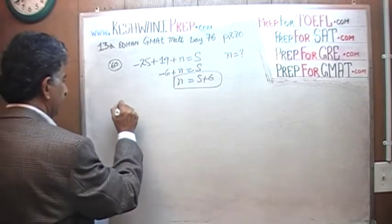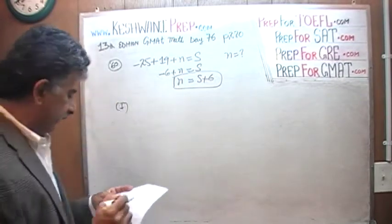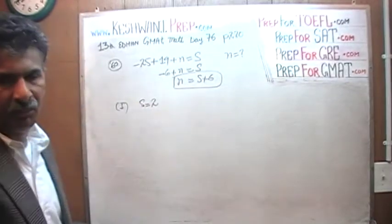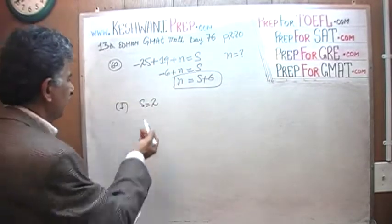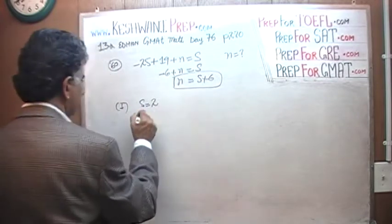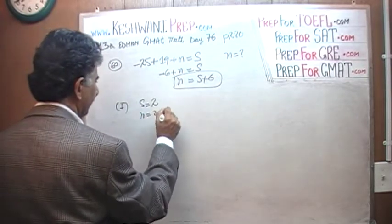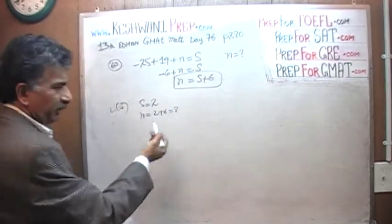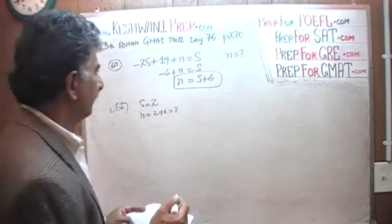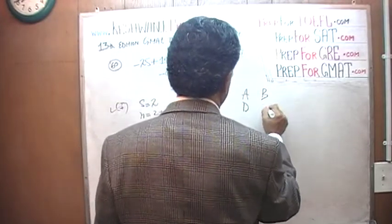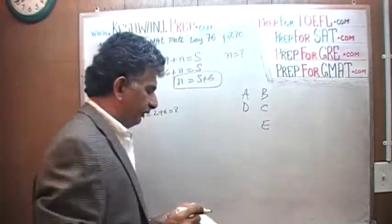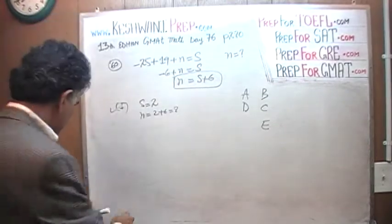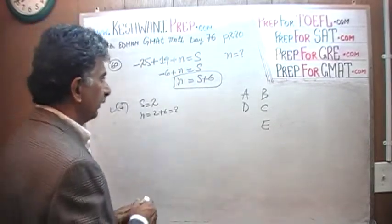In the very first statement they tell us that s equals 2. You see how simple it is? It's too ridiculous. I don't know why they waste their time. s equals 2, of course n is going to be 8. n is 2 plus 6, it's 8. The first statement, of course we didn't have to do this part but I couldn't resist myself, it's too simple. And therefore, A, D, B, C, E. And since the first statement by itself is enough, the answer cannot be B, C, or E.